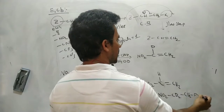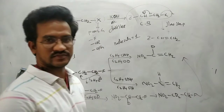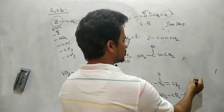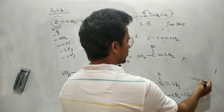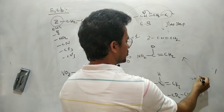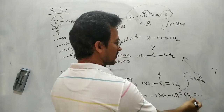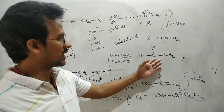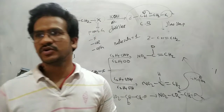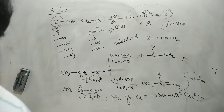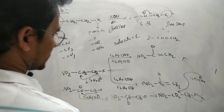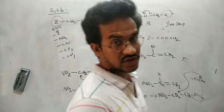Then the elimination reaction occurs: C2H5ONa removes the deuterium and fluorine leaves, giving the alkene product. You will get the product with deuterium incorporated. Because the hydrogens are acidic in nature, that deuterium exchange occurs — hydrogens are replaced by deuterium.